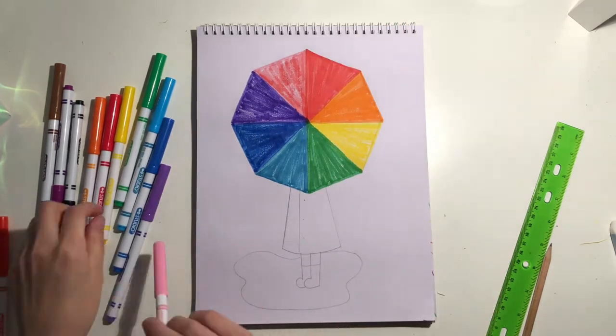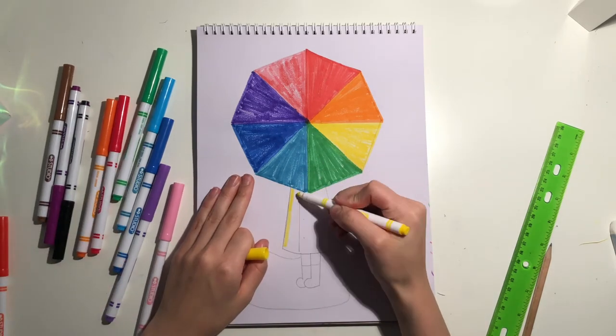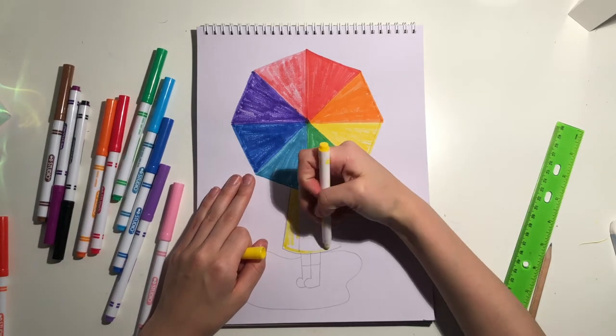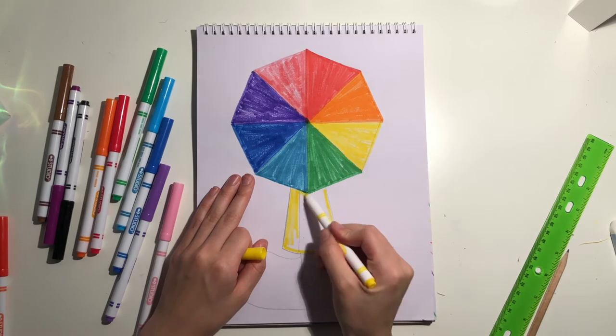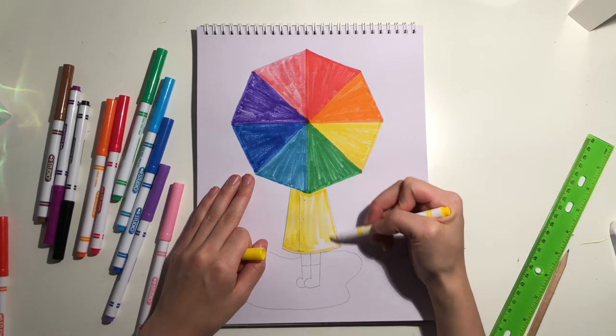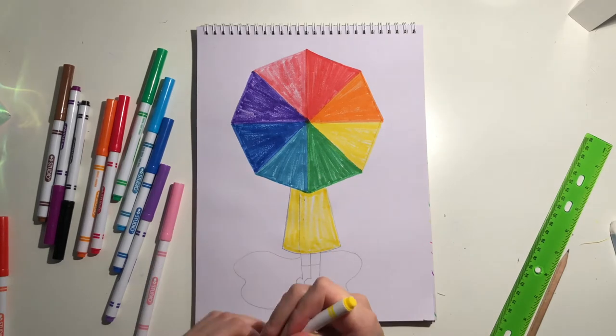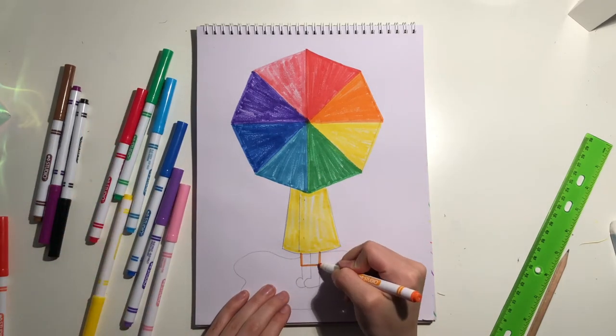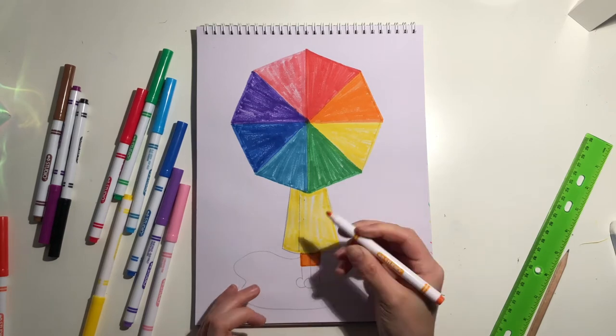Next, pick a color for your raincoat. I chose to do yellow. Also pick a color for the leggings and the boots.